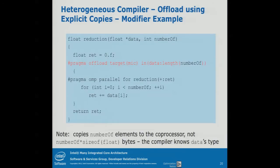Here's an example of how to offload a pointer. You say 'in' from host to mic, copy data with length equal to the number of elements — the compiler is smart enough to figure out the data size for the particular type. You can only copy things that are bitwise copyable, which means no pointers — only plain data types like flat arrays or multidimensional arrays that are not Java-style reference arrays. Plain old data types that you can stick into memcpy.